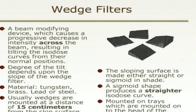Wedge filters cause a progressive decrease in intensity across the beam, resulting in tilting of the isodose curves from their normal position. The degree of tilt depends upon the slope of the wedge. Materials used to make wedge filters are tungsten, brass, lead, or steel. These are usually mounted at a distance of 15 cm from the skin surface. The sloping surface is either made straight or sigmoid in shape, as sigmoid shape produces straighter isodose curves. Wedge filters are mounted on trays attached to the head of the machine.